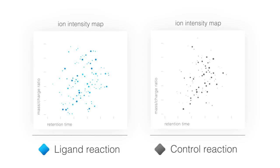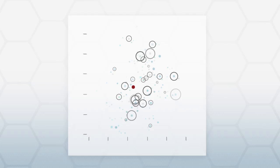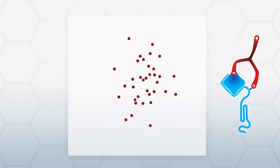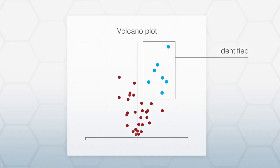Now we compare the ligand reaction with the control reaction and reveal the differences. Due to the specific ligand-receptor interactions, the receptor peptides are enriched. In this way, we identify your receptors.